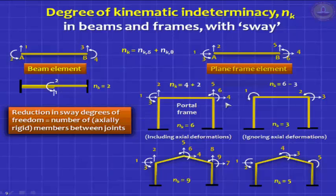But you need not worry too much. The way to find out n_k_delta, taking advantage of axial rigidity in all the members, is by subtracting from the n_k_delta that you get, the number of constraining equations that you have. So every member gives you 1 equation. The length of the member does not change. So totally 6 minus 3, you have got n_k equal to 3.